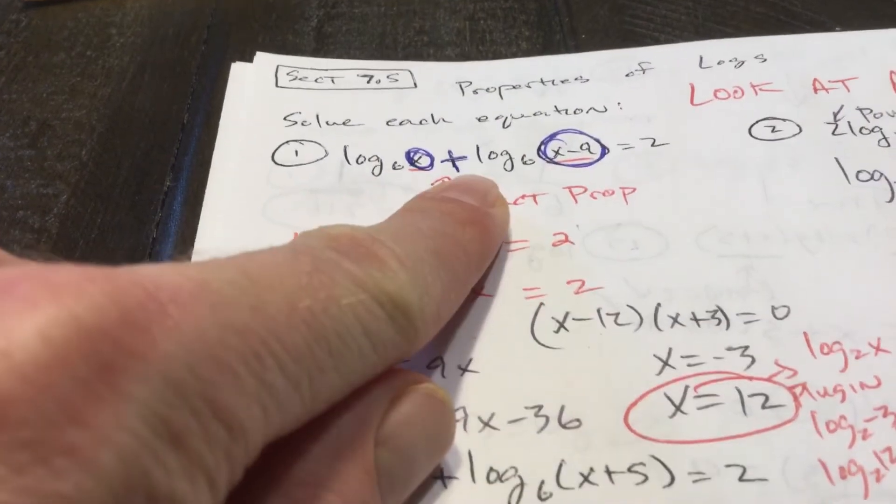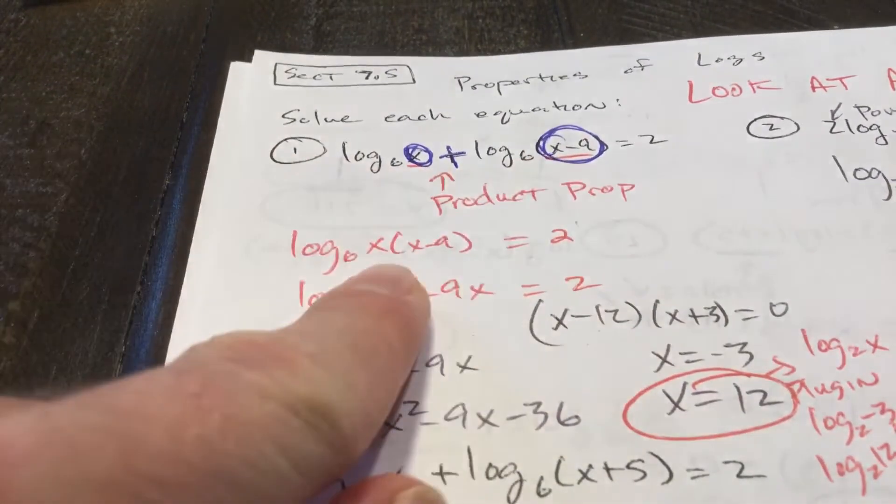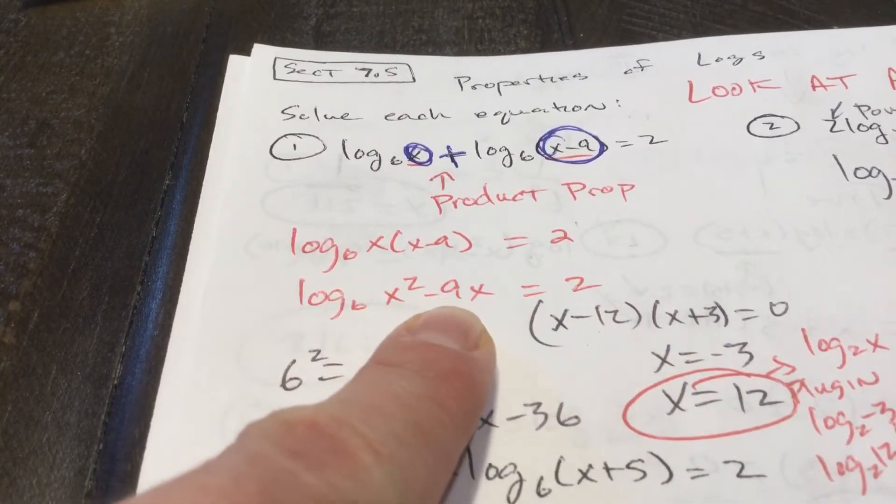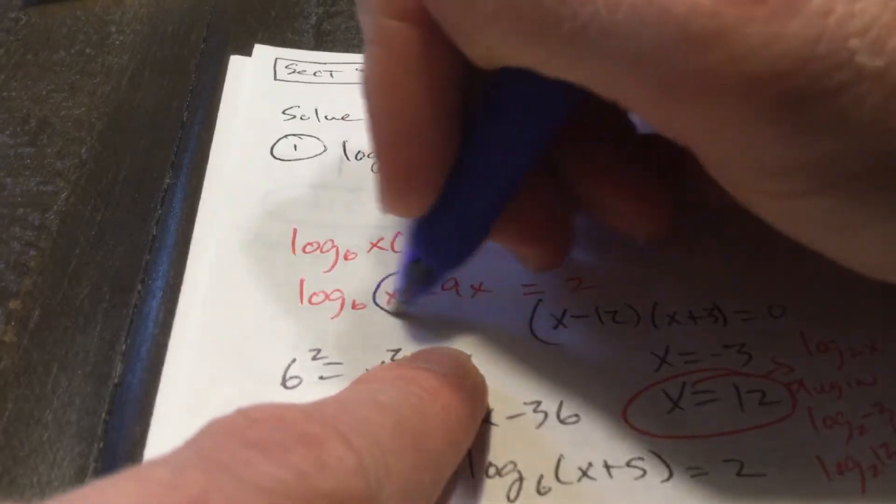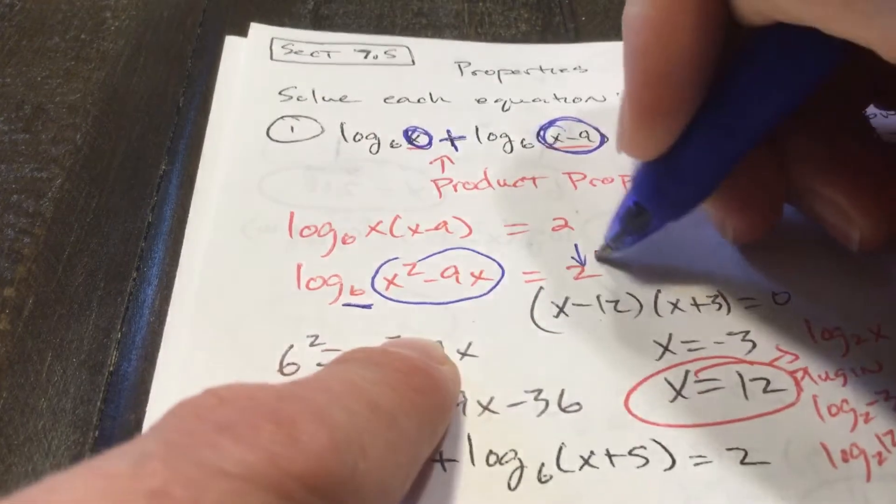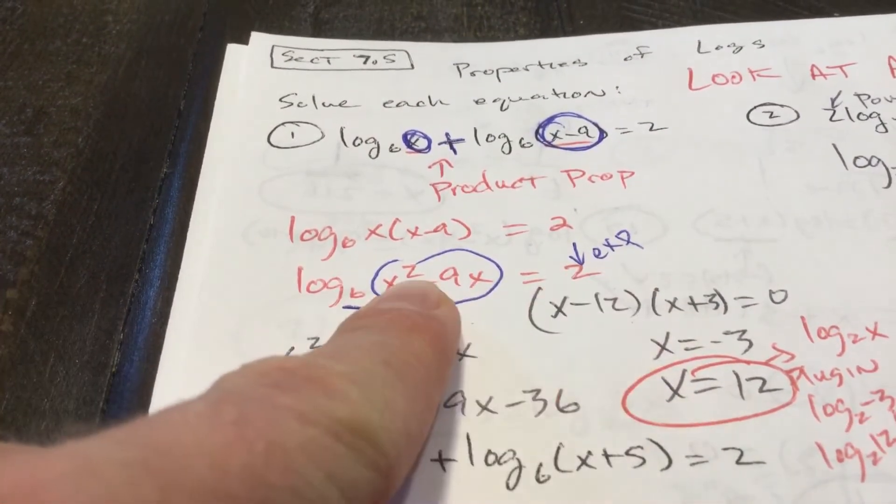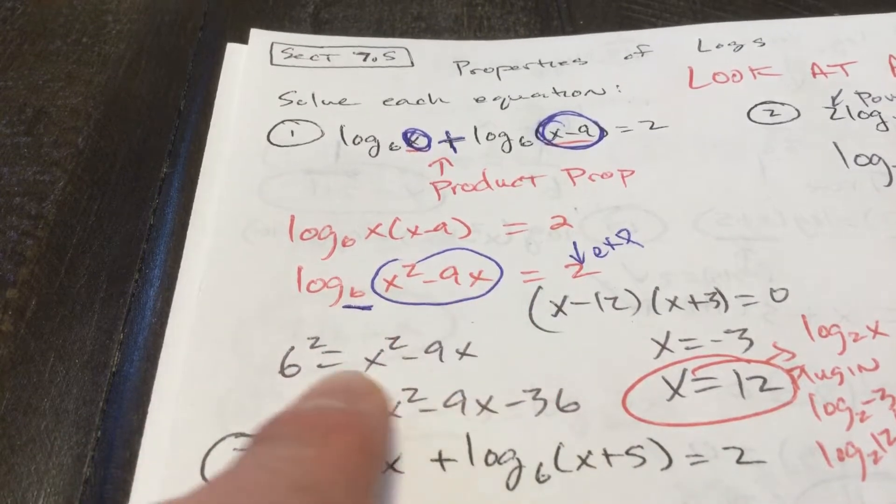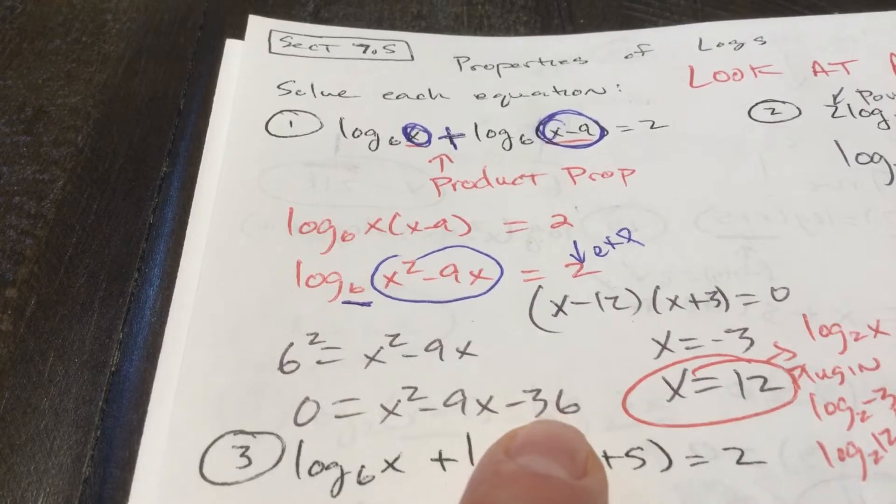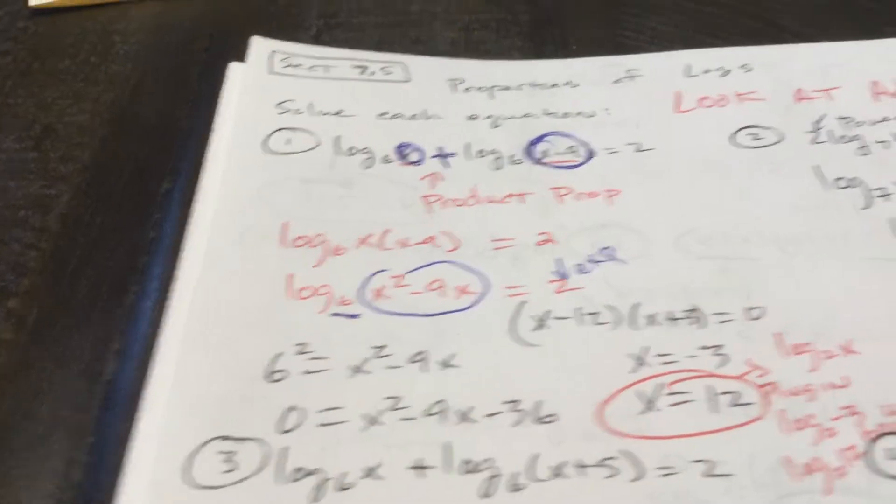I multiply those two together. I can combine them to be log base 6 of x times x minus 9, which is log base 6 of x squared minus 9x. Now, this is the base 6. This is the exponent. And this is what we call the answer. So 6 squared equals x squared minus 9x. That's 36. It needs to be moved over to the other side. You've got to factor. 1 multiplied by 36 differs by 9, negative 12 and positive 3. Set that equal to 0.